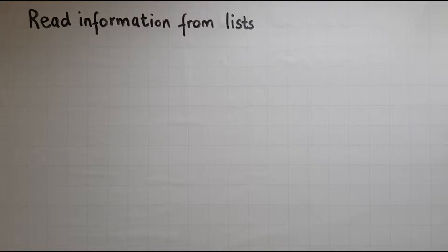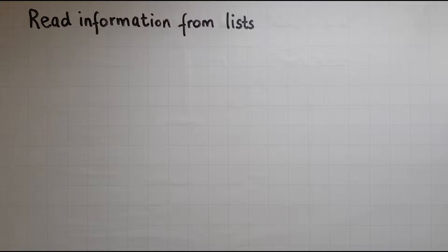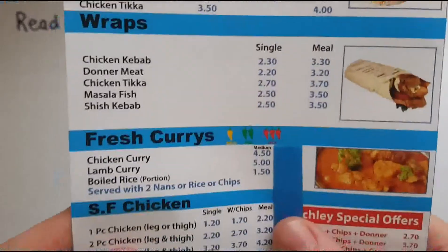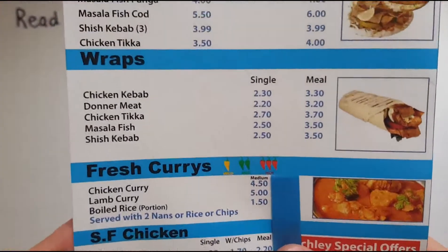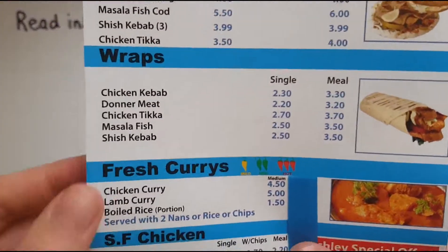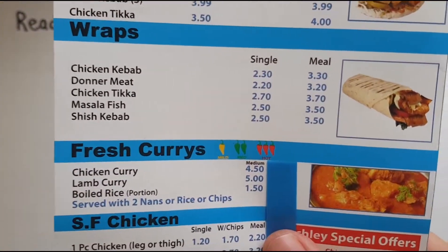In this video we'll learn to read information from lists. We come across lists in everyday life in many cases. One example is a takeaway menu where you get information about what is sold and how much it costs.